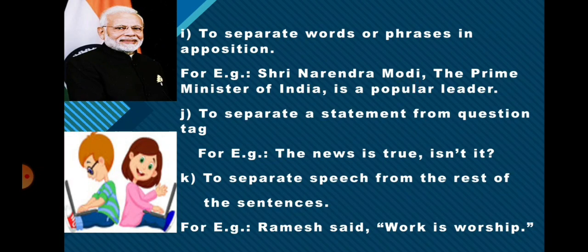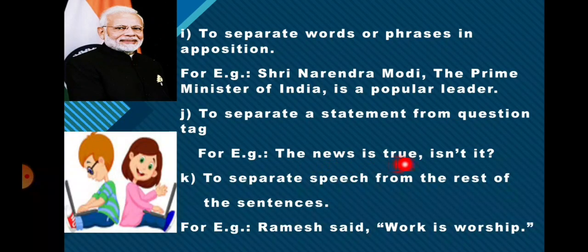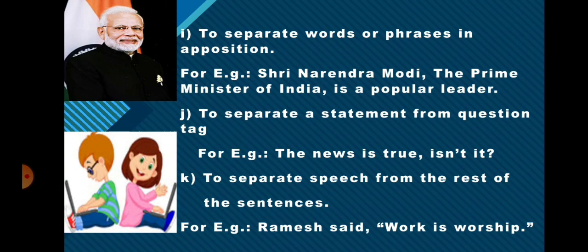The comma is used to separate a statement from a question tag. For example: 'The news is true, isn't it?' The question tag is a confirmation of the statement, so after the statement we put a comma. The comma is also used to separate speech from the rest of the sentence. For example: Ramesh said, 'Work is worship.' So in order to separate speech from the rest of the sentence, we put a comma.